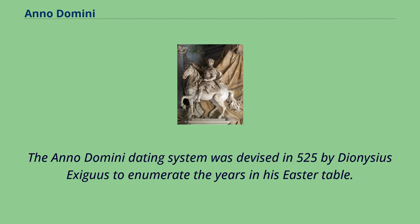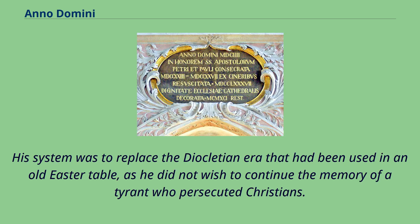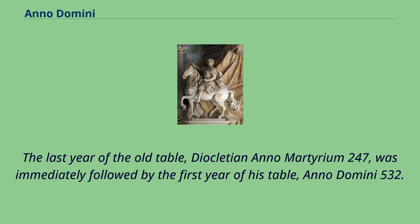The Anno Domini dating system was devised in 525 by Dionysius Exiguus to enumerate the years in his Easter table. His system was to replace the Diocletian era that had been used in an old Easter table, as he did not wish to continue the memory of a tyrant who persecuted Christians. The last year of the old table, Diocletian Anno Martyrium 247, was immediately followed by the first year of his table, Anno Domini 532.